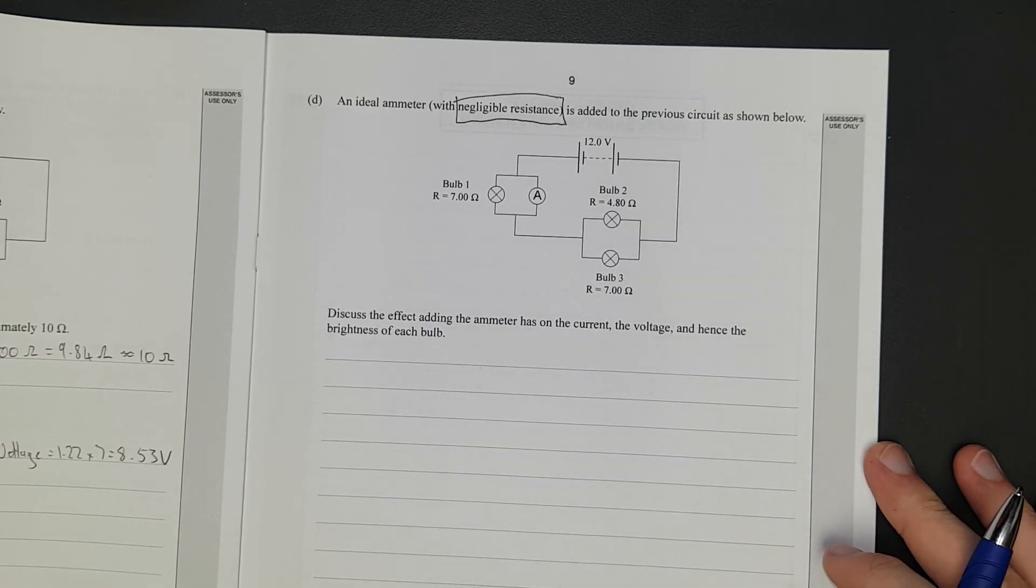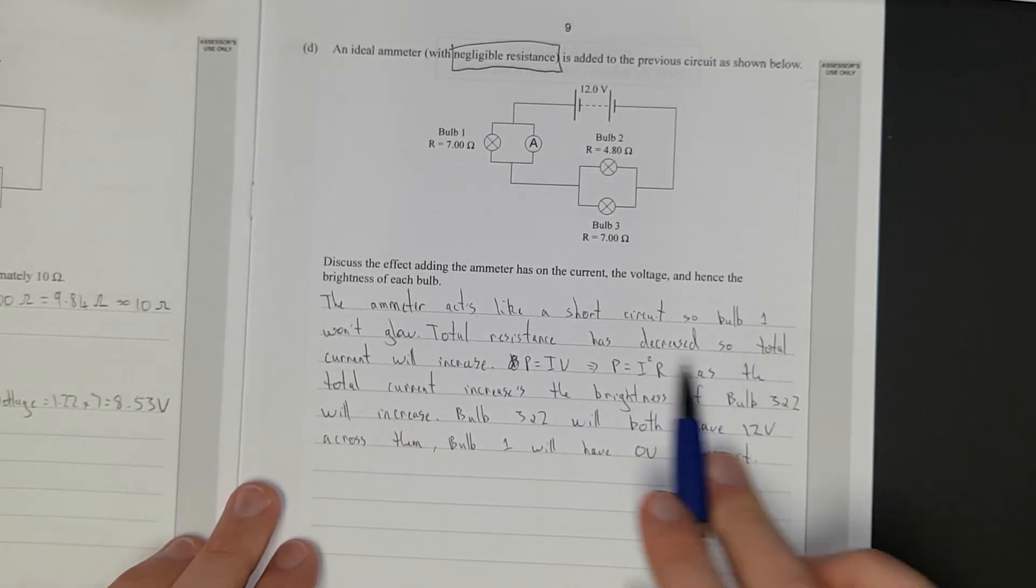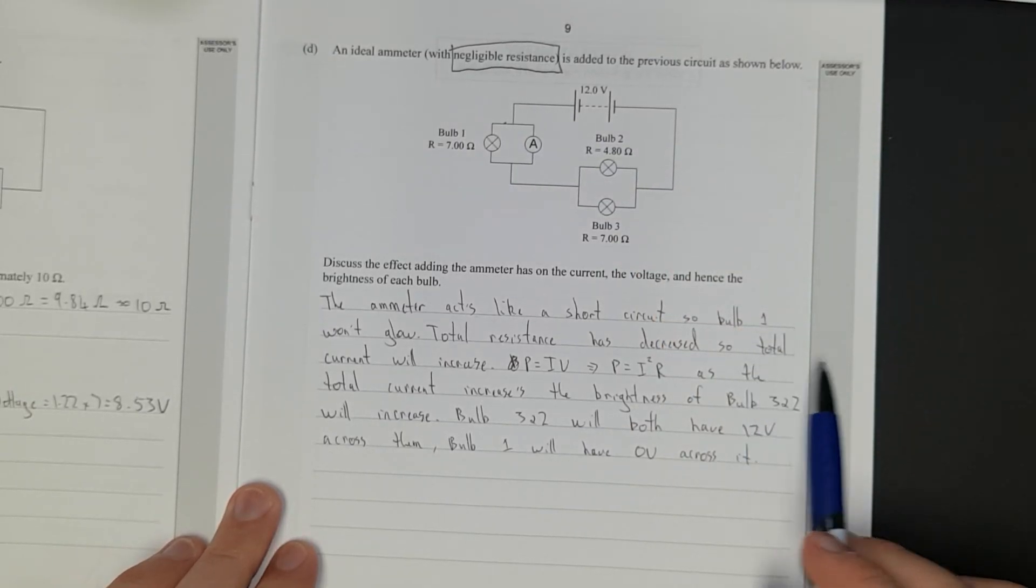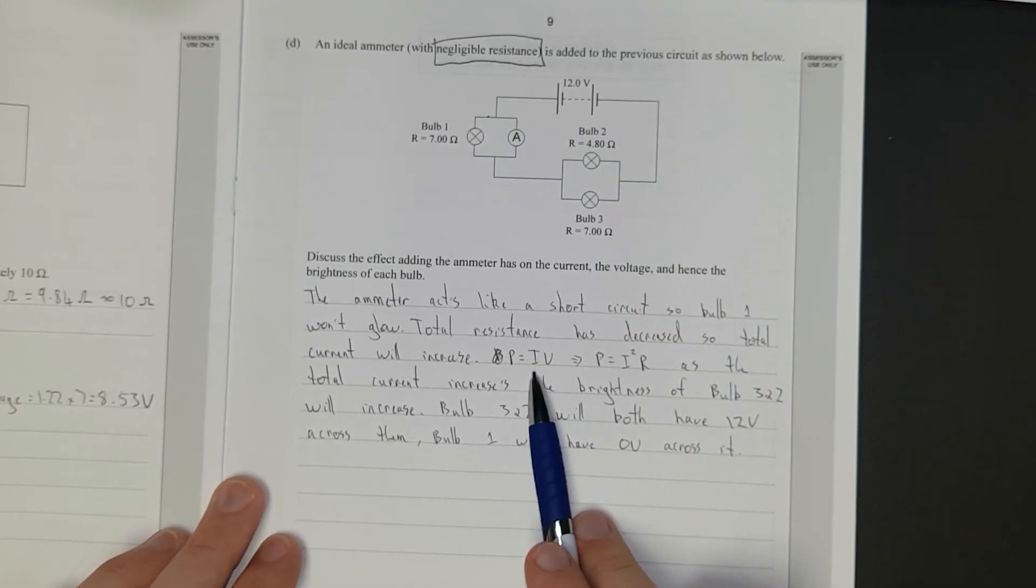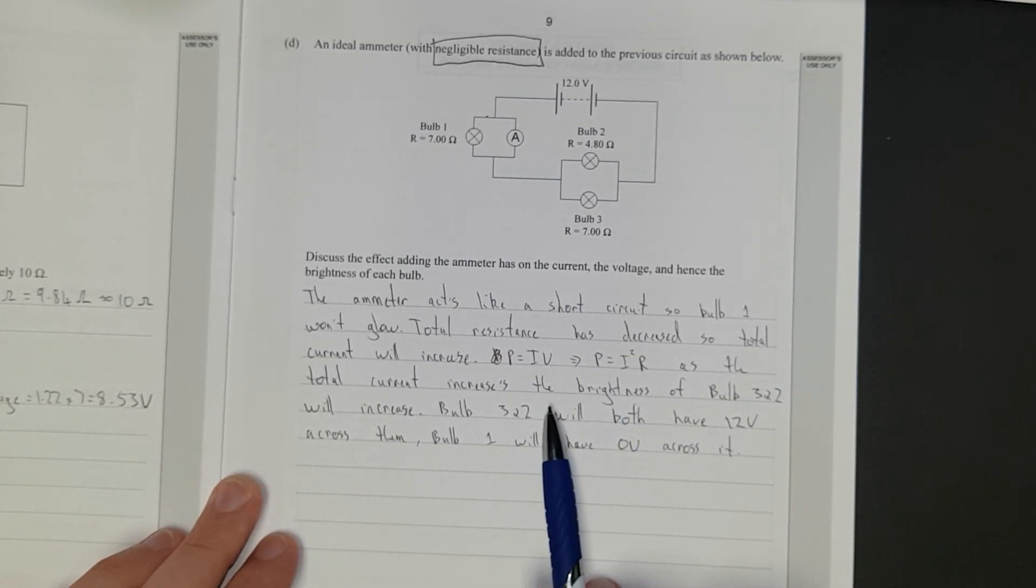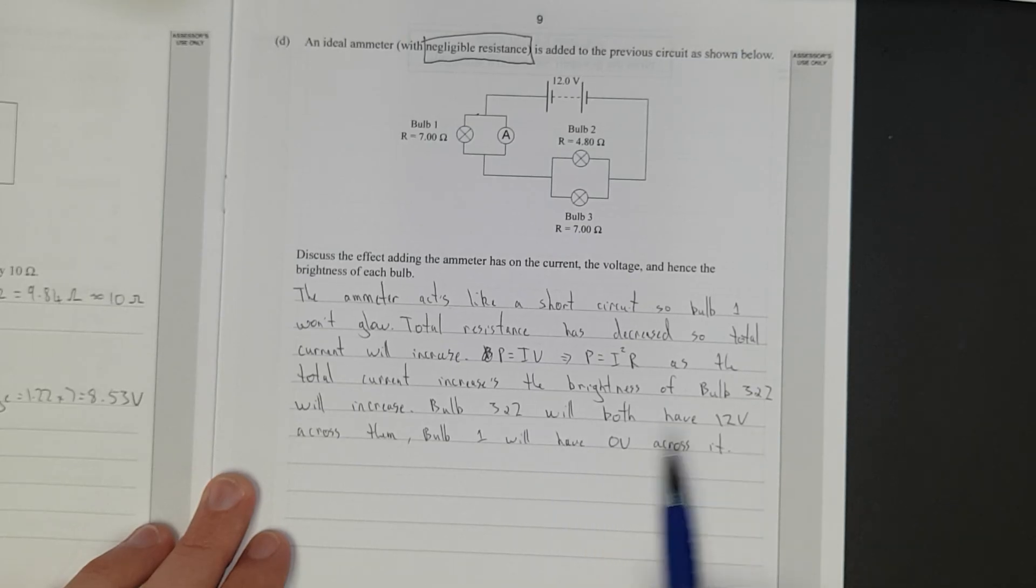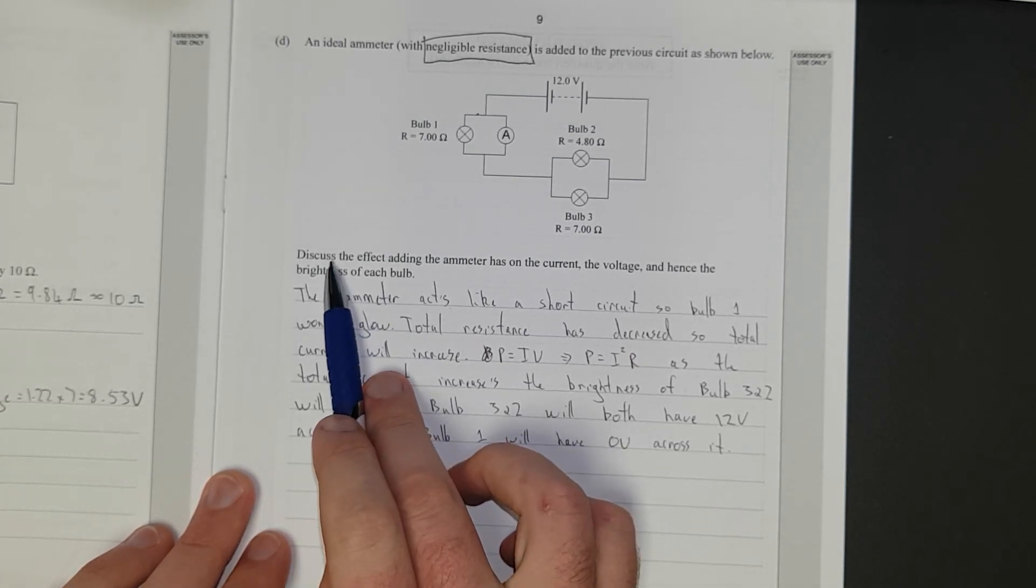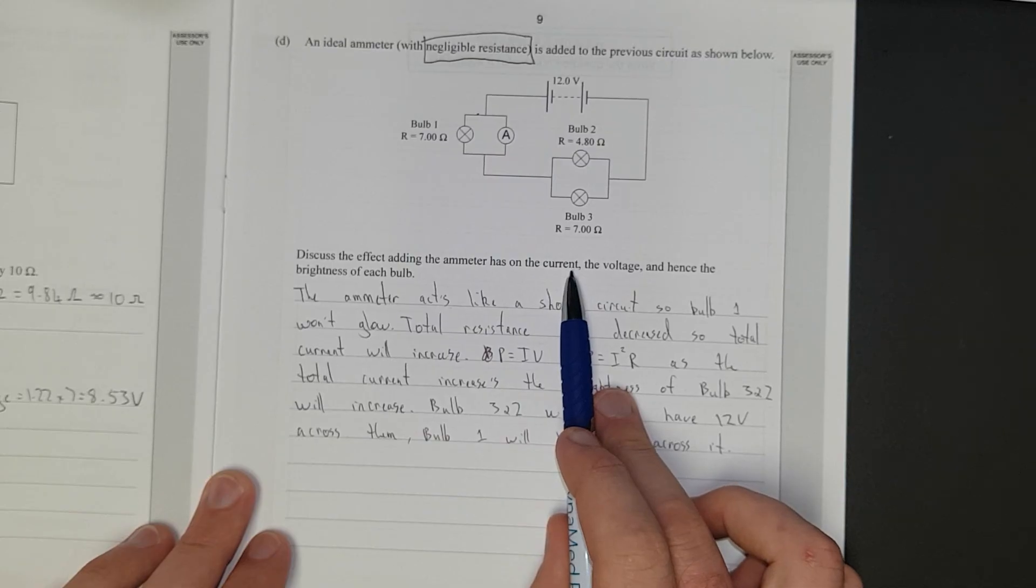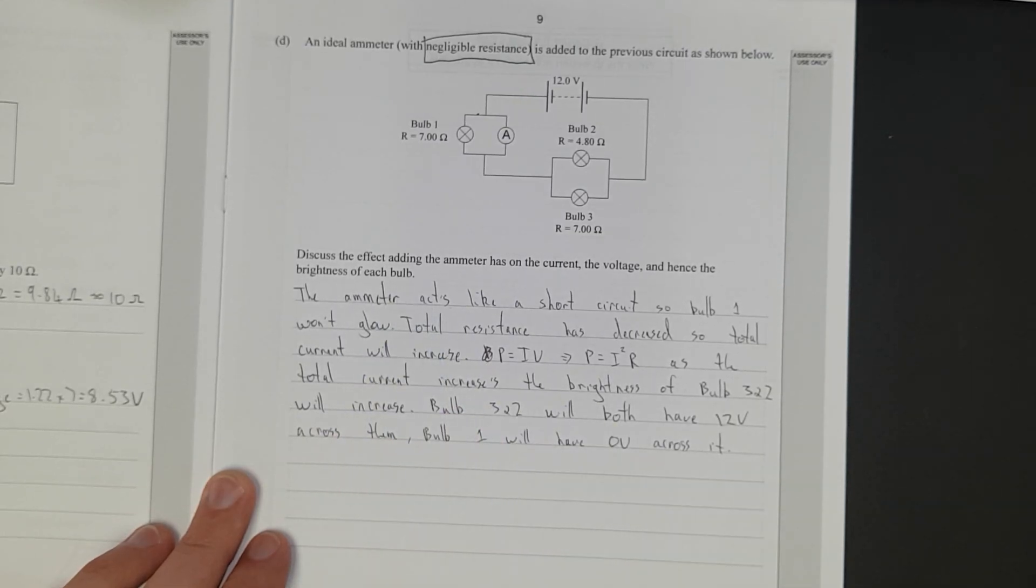Right, so I'm going to pause the video, write the answer, and then I'll discuss it. Right, so I said the ammeter acts like a short circuit, so bulb 1 won't glow. Total resistance has decreased because we've shorted that out, so the total current will increase. Power is current times voltage. If you sub in V equals IR, you get I times I times R, which is just power equals current squared times R. As the total current increases, the brightness of bulbs 3 and 2, the two remaining bulbs, will increase. Bulbs 3 and 2 will both have 12 volts across them. Bulb 1 will have zero volts across it. And we've answered the question. Current increases, the voltage, and hence the brightness of each bulb. And that is it.